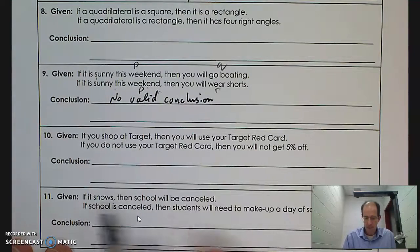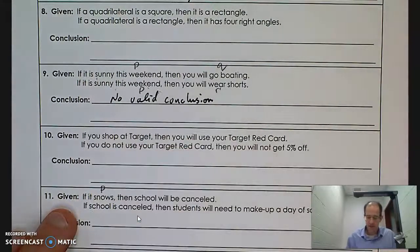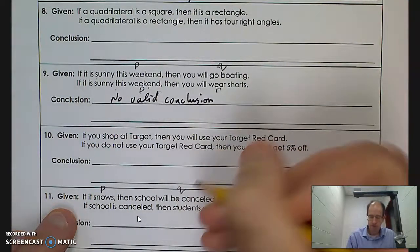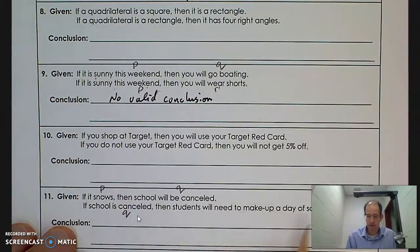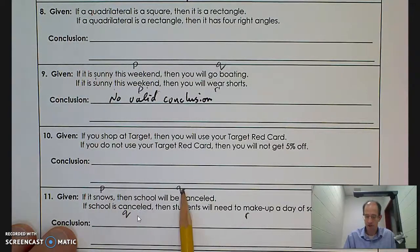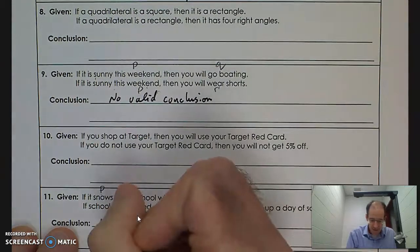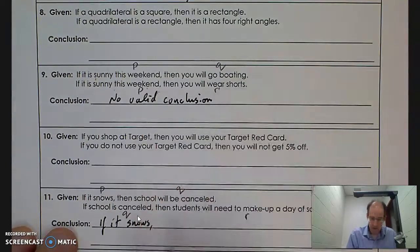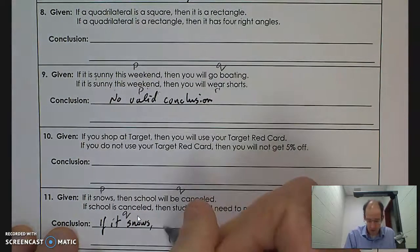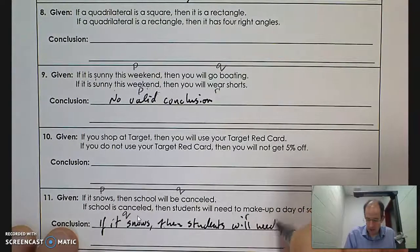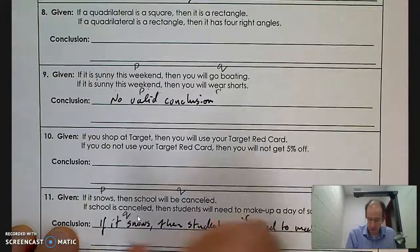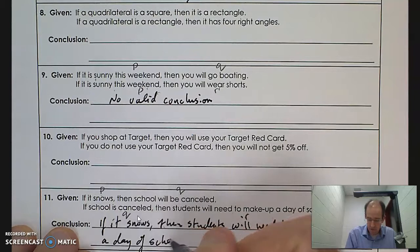Question eleven: if it snows, that's my hypothesis p, then school will be canceled — that's my conclusion q. If school is canceled — that matches q — then students will need to make up a school day — that's r. This matches the law of syllogism: if p then q, if q then r, therefore if p then r. So we write: if it snows, then students will need to make up a day of school.